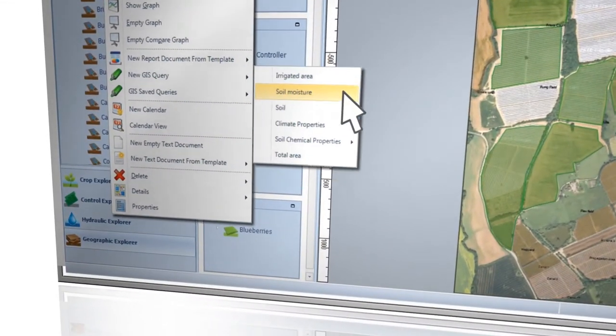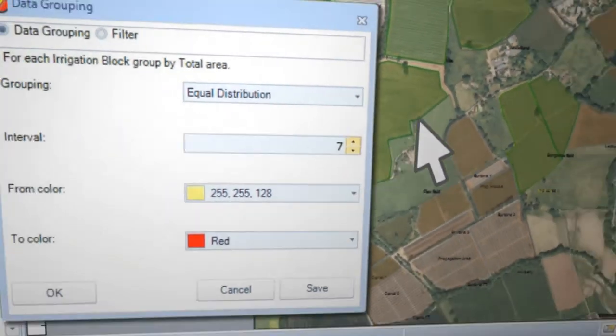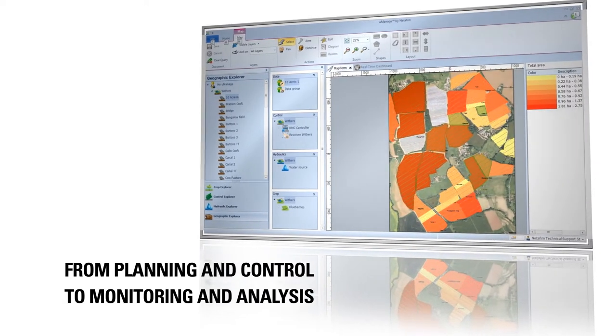Covering all crop management processes, U-Manage is suitable for small to large open fields and greenhouses. From planning and control to monitoring and analysis,